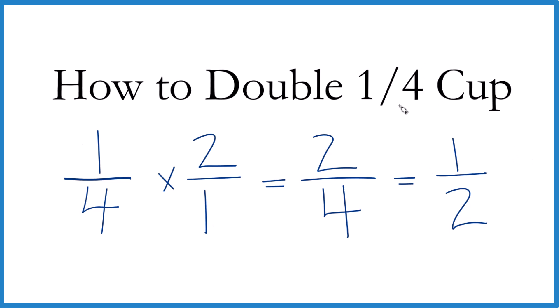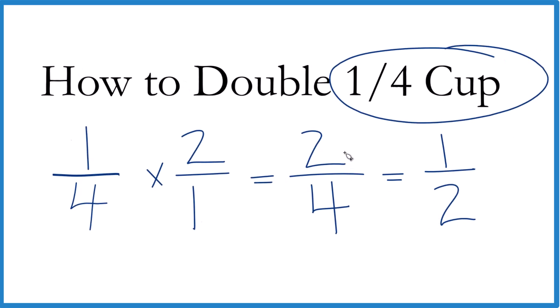So when you double 1 quarter cup, you end up with 2 fourths of a cup. Or you could just call it 1 half cup, which might be a little bit easier if you're using this for a recipe.